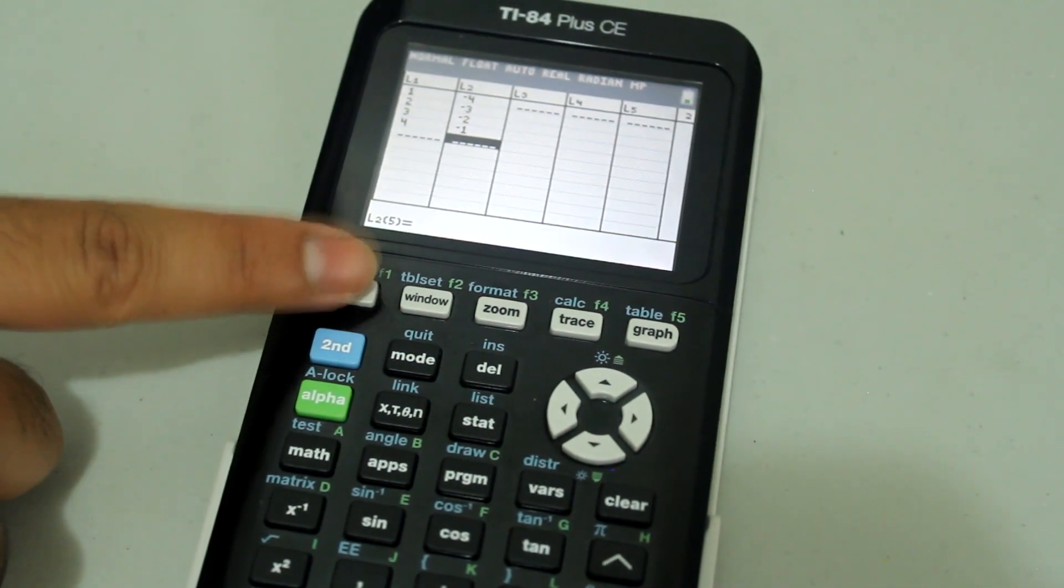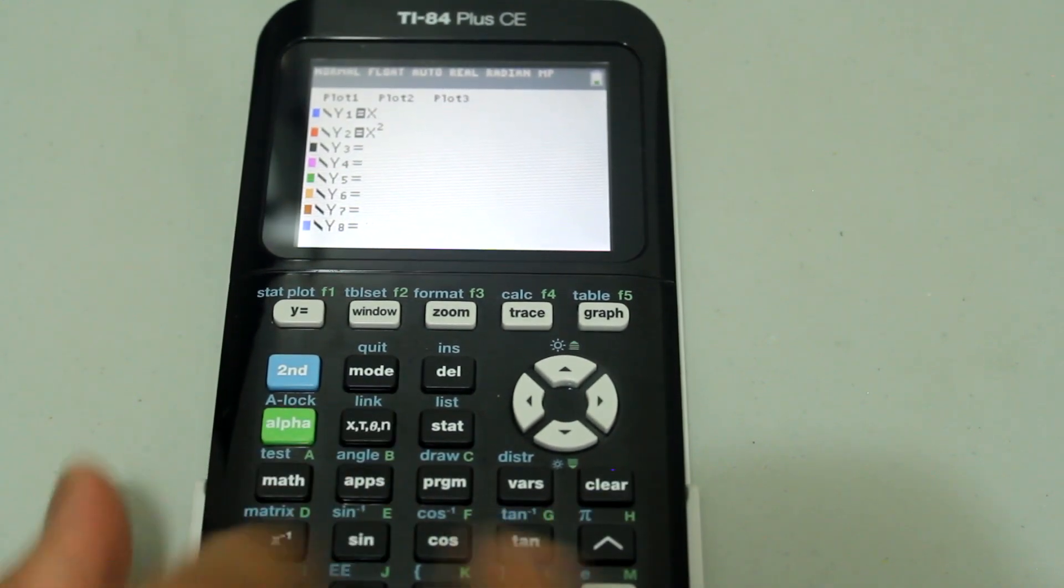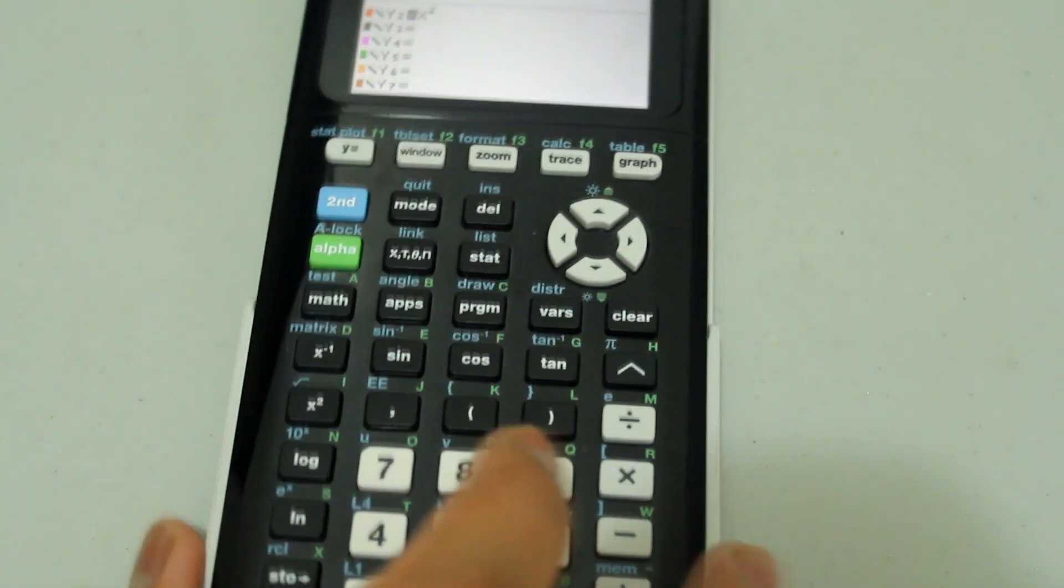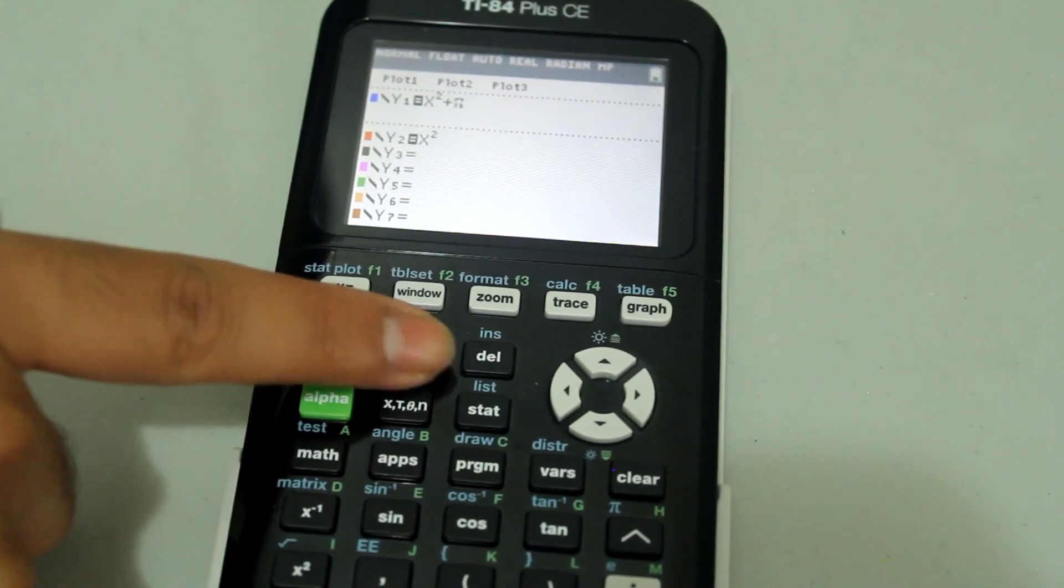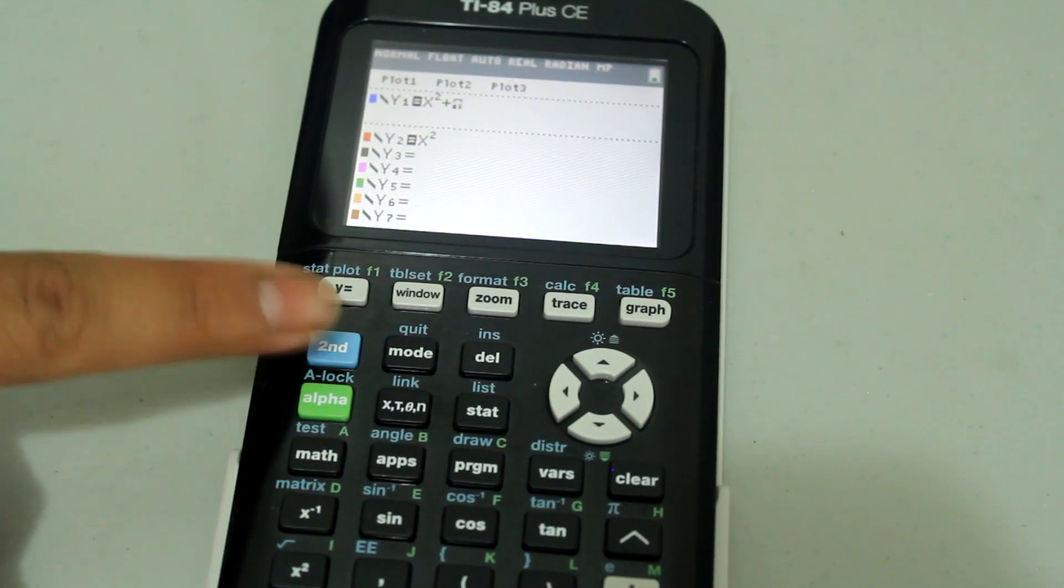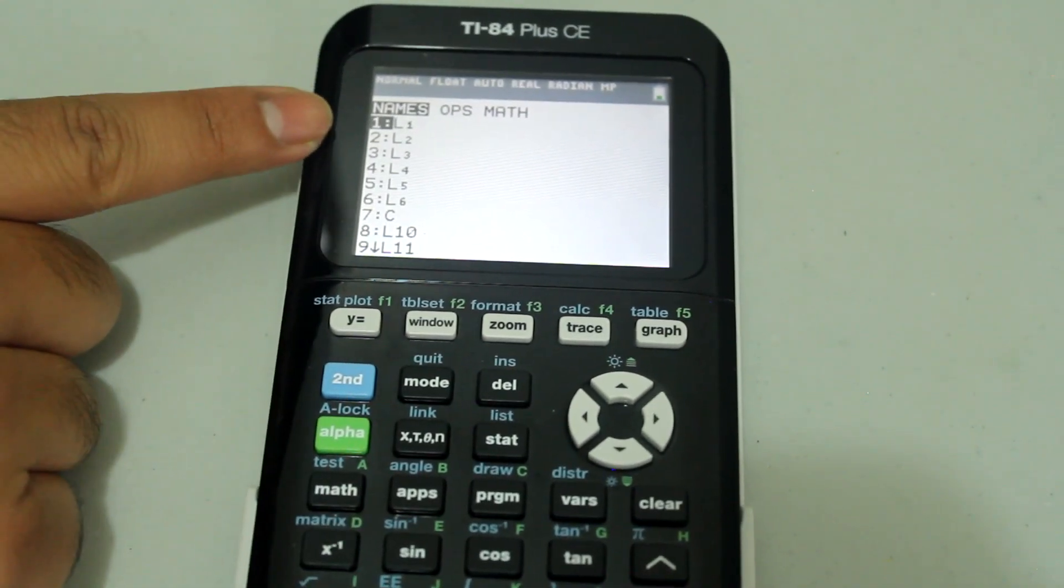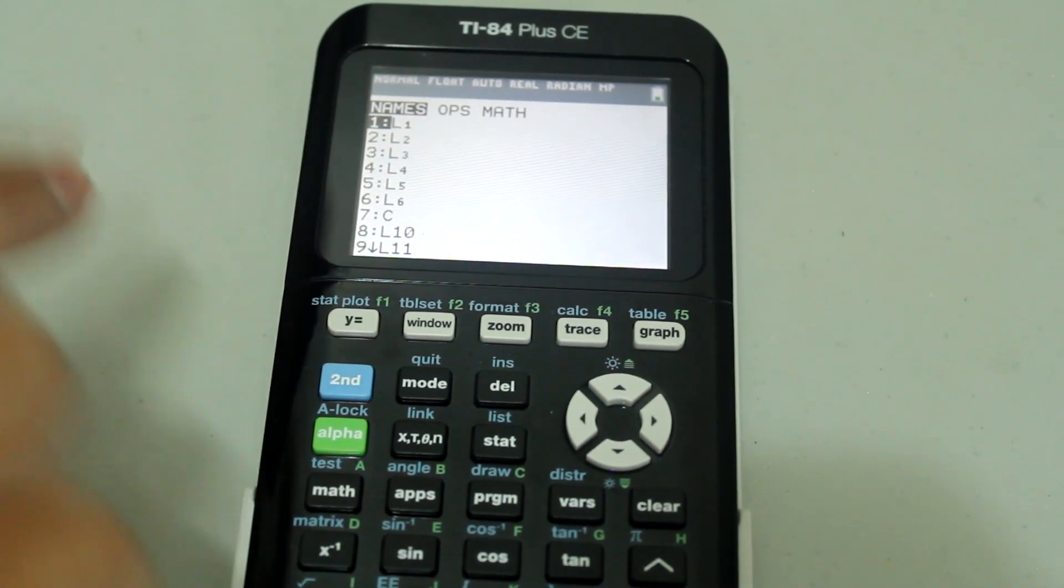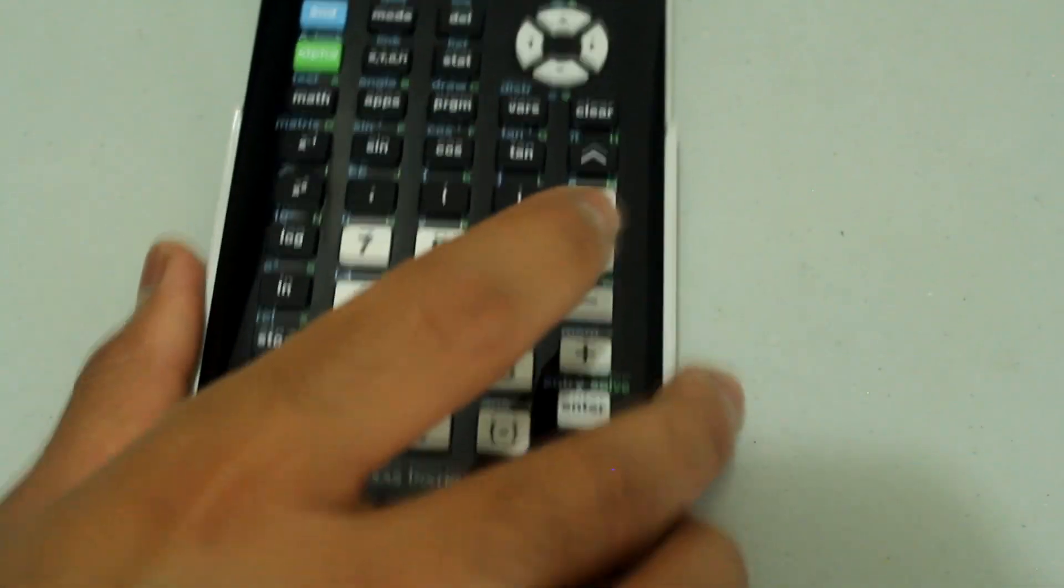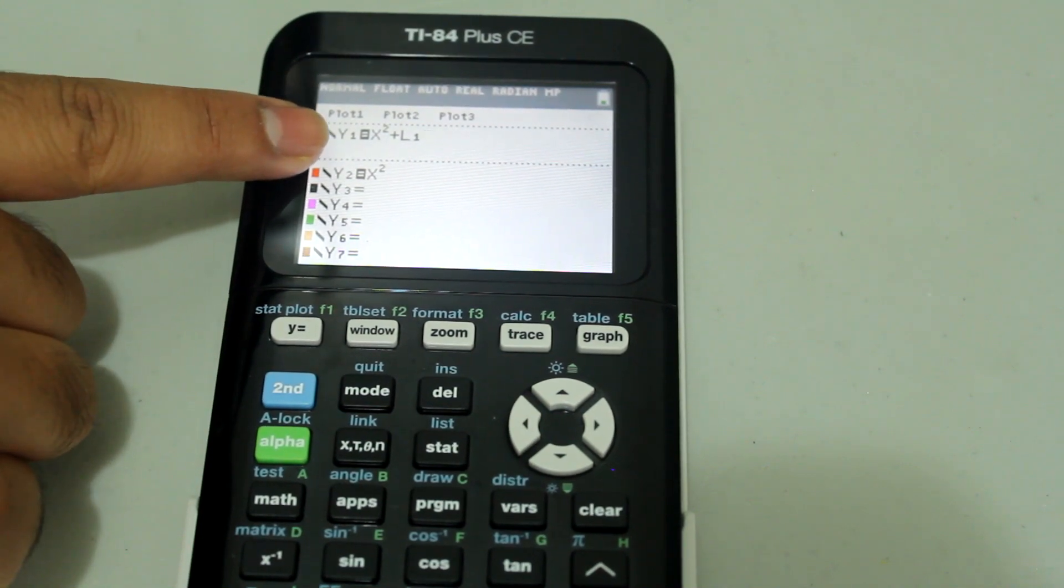Now I'm going to go back to y equals and I'm going to type in x squared, square that, and now I'm going to add. I'm going to second, stat, which is going to select the list option. And now since the positive values are under L1 I'm going to select L1 and since the cursor is already next to L1 just press enter. And now the screen looks like this, y1 equals x squared plus L1.